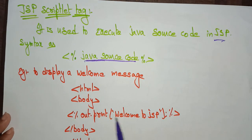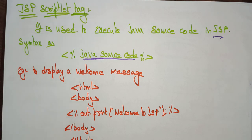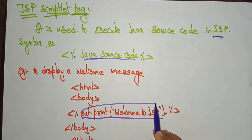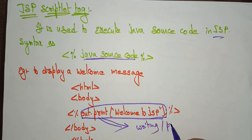Let's see a simple example — displaying a welcome message using scriptlet tags. Here I have an HTML body. This is Java source code because I am using out.print. Out.print is a printing statement — a writing or printing statement of Java.